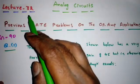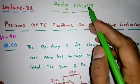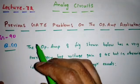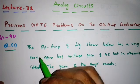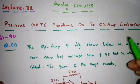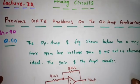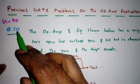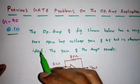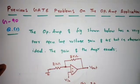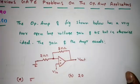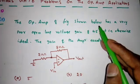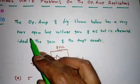Hi everyone, this is lecture 32 in analog circuits. In this lecture I will discuss some previous GATE problems on op-amp applications. This question came in GATE 1990.